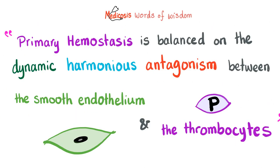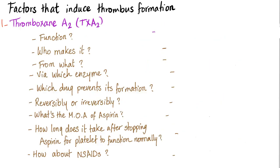As you know, primary hemostasis is balanced on the dynamic harmonious antagonism between the smooth endothelium, which is anti-coagulation, and thrombocytes, which are pro-coagulation. What are the factors that induce thrombus formation, also known as pro-coagulation factors or thrombogenic factors?